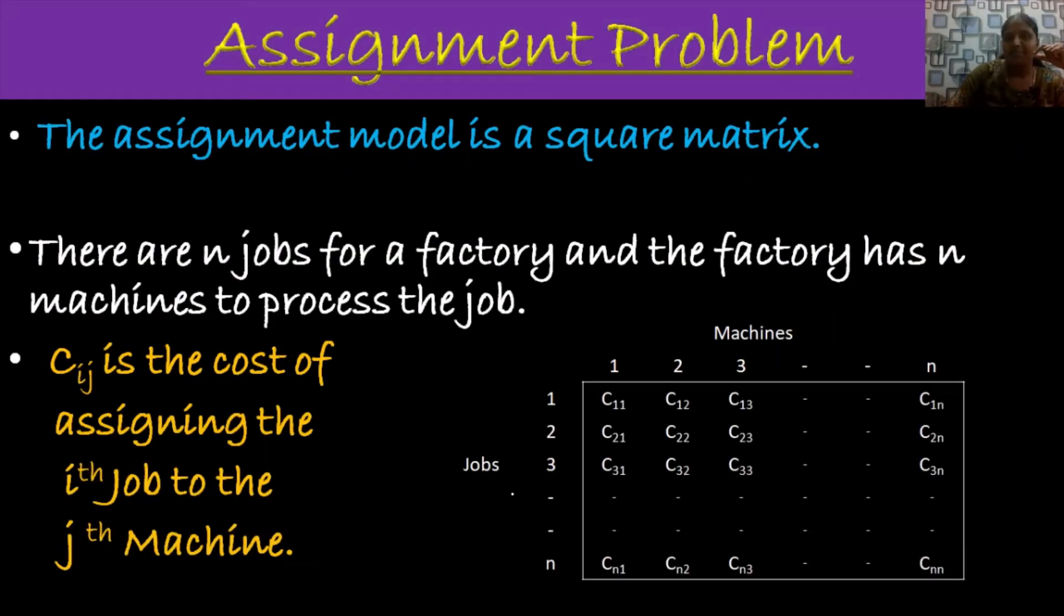Basically, it is a square matrix. The assignment model is a square matrix. For example, there are N jobs for a factory and the factory has N machines. I am just giving you the cost matrix associated with it.